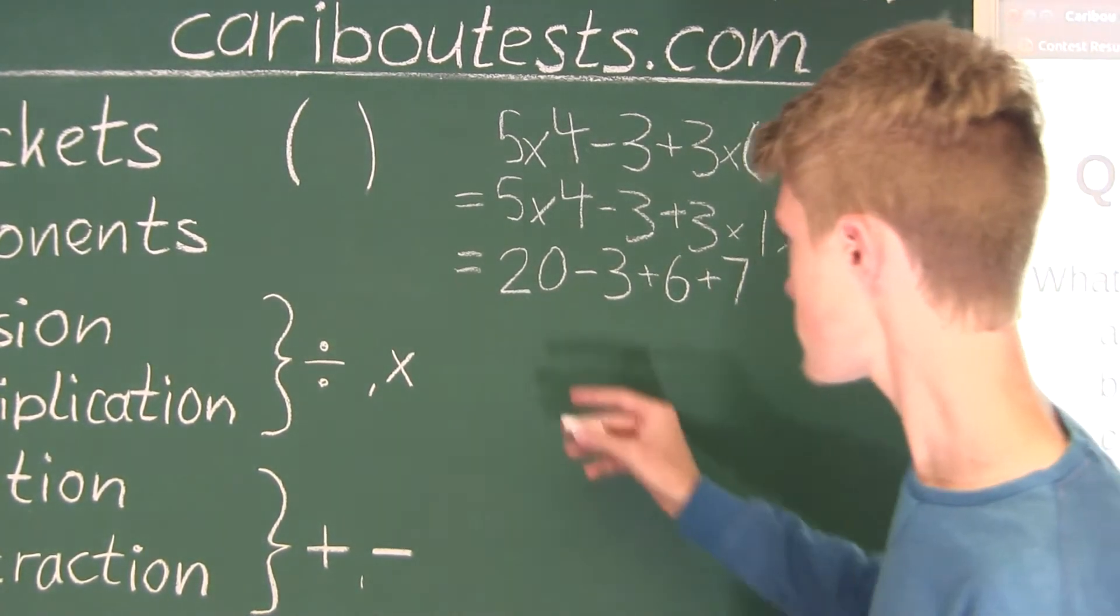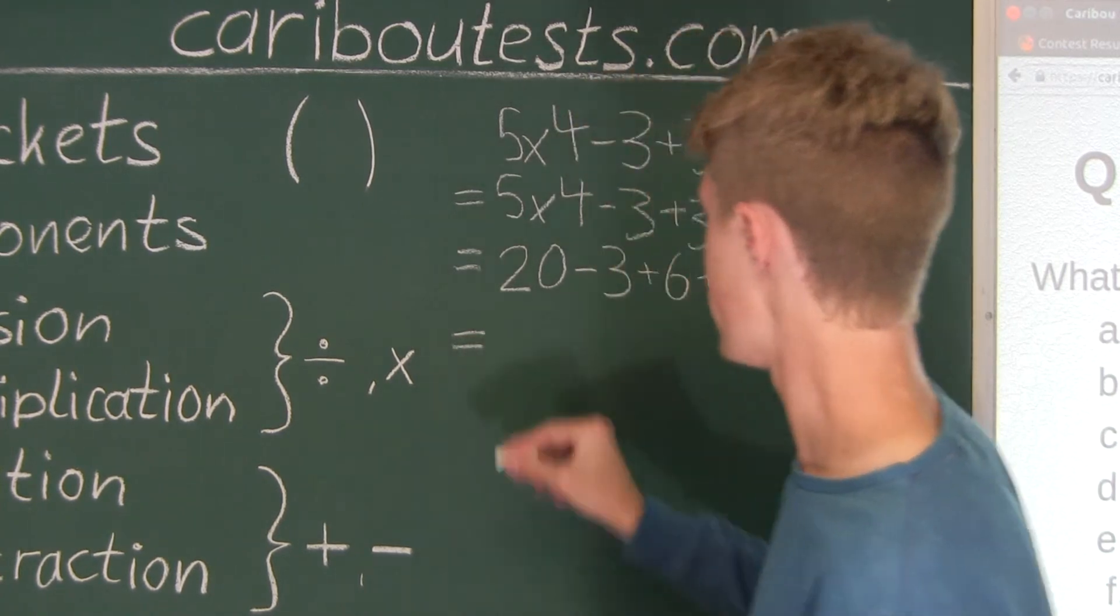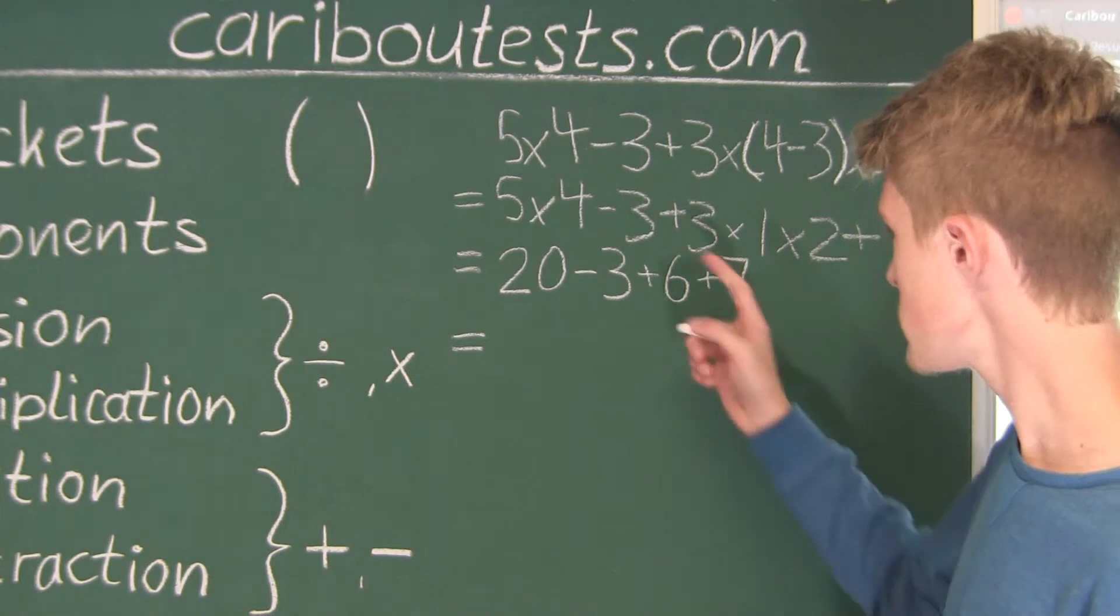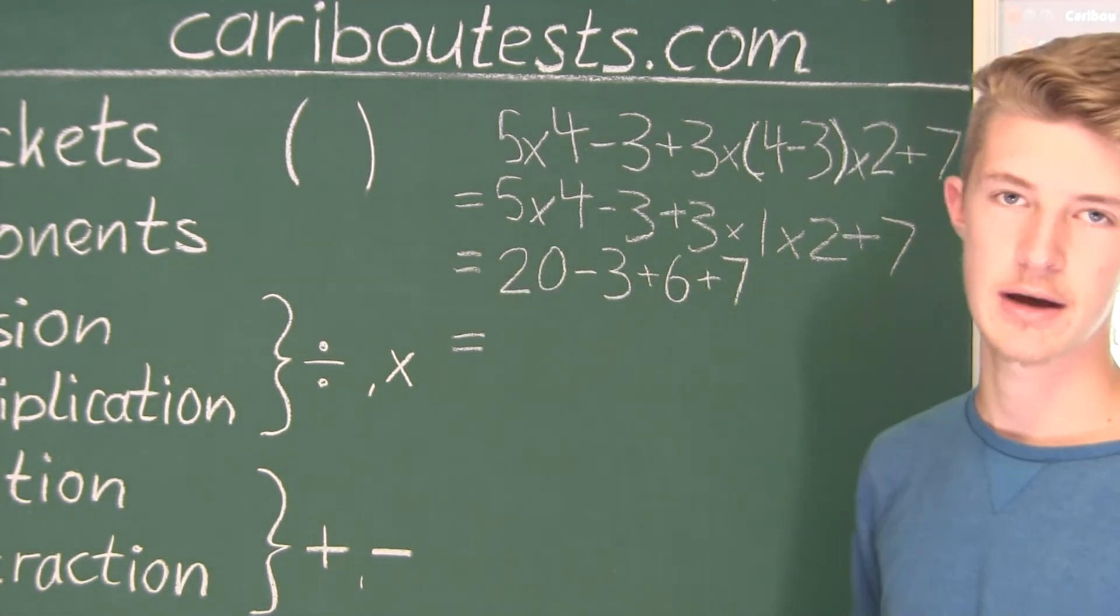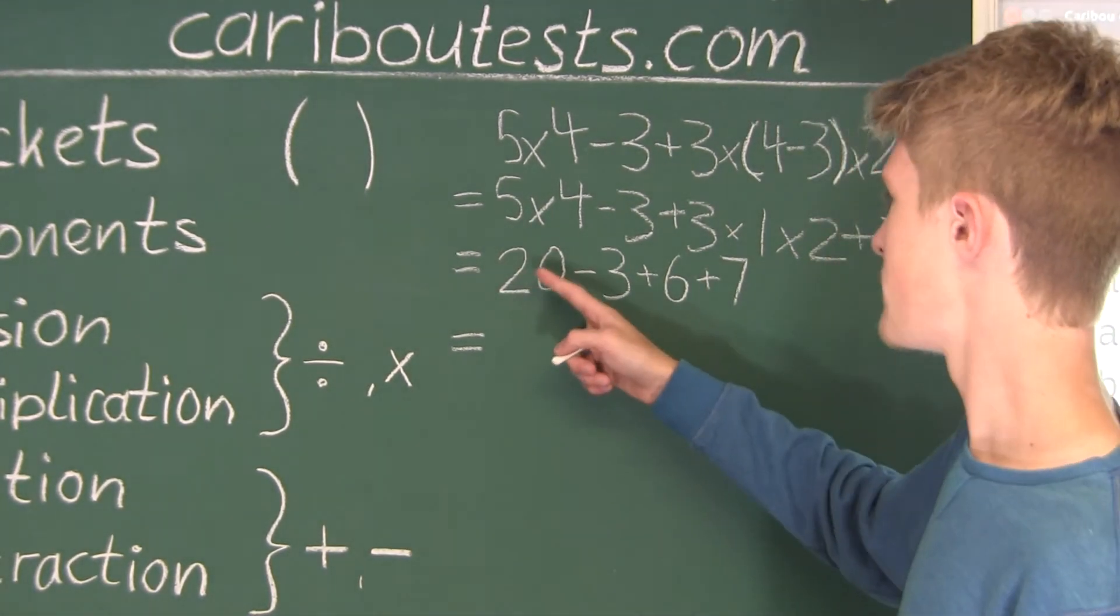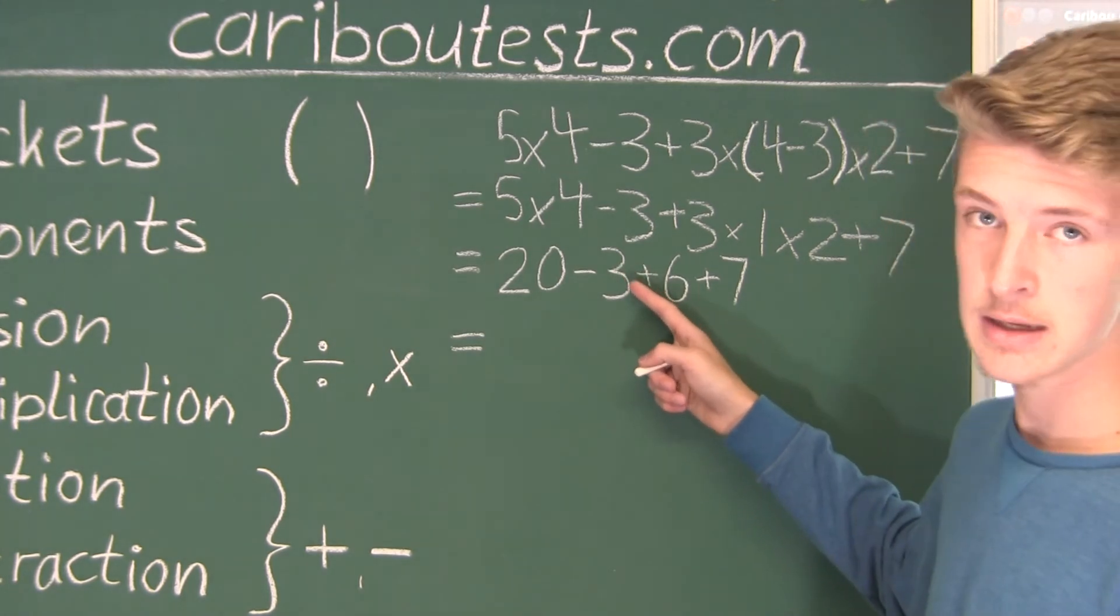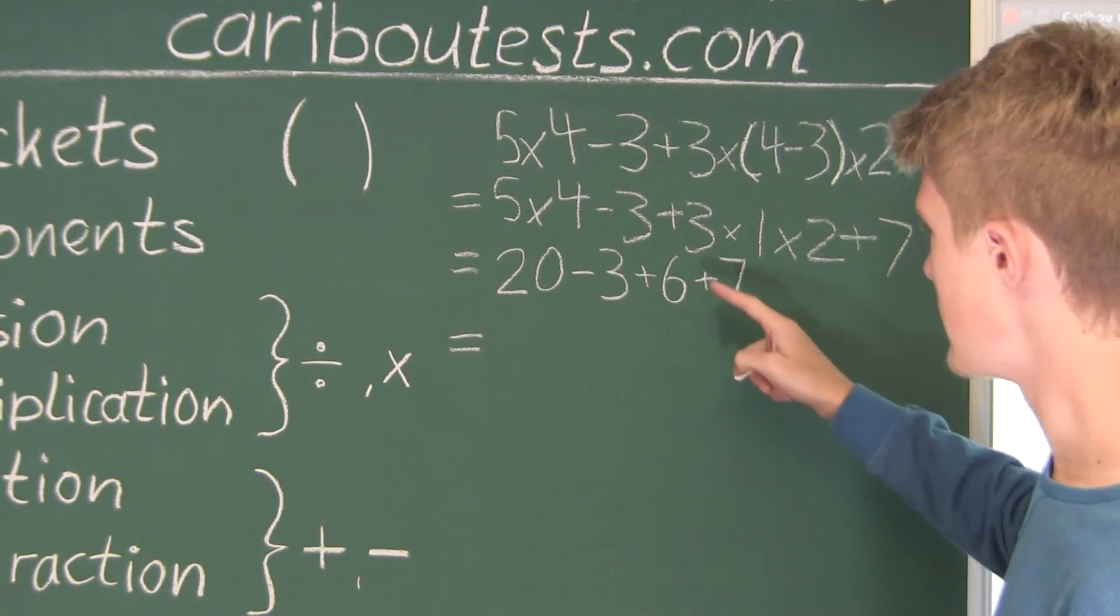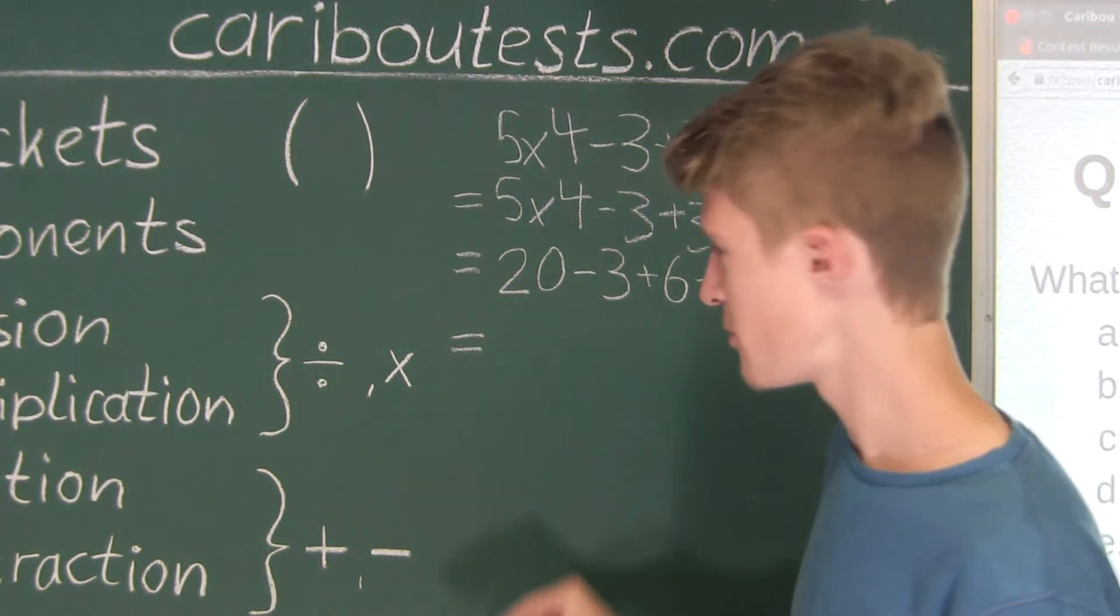Alright. And now, finally, all we have is subtraction and addition, and like we said, we will just do it as we see it from left to right. So, we have 20 minus 3 is 17. 17 plus 6 is 23, and 23 plus 7 is equal to 30.